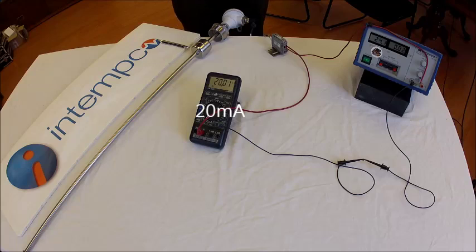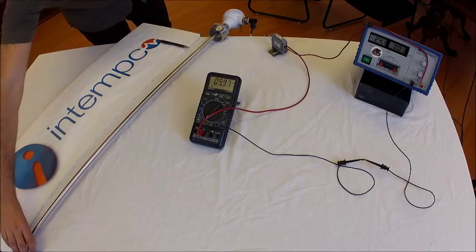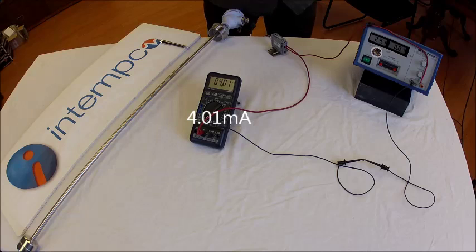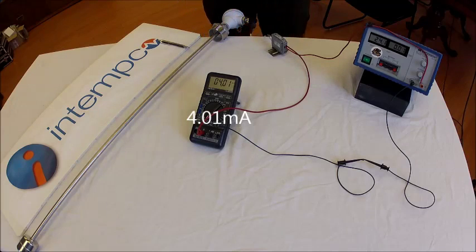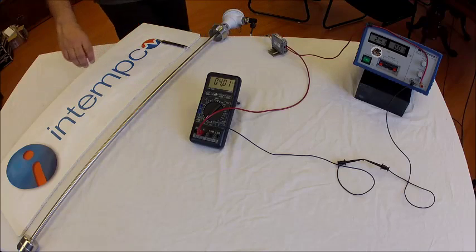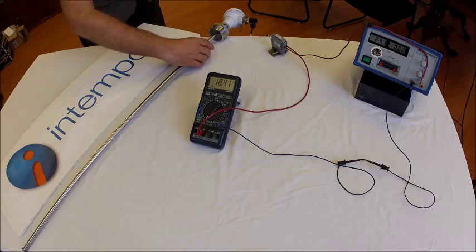Now you have to adjust the zero point after making each span adjustment. So we'll bring it down to zero again. 4.01, close enough. It may take a couple of passes until both are at their desired measurements. So now we're just going to go back up to the same position so you can see that this is 20 milliamps again.